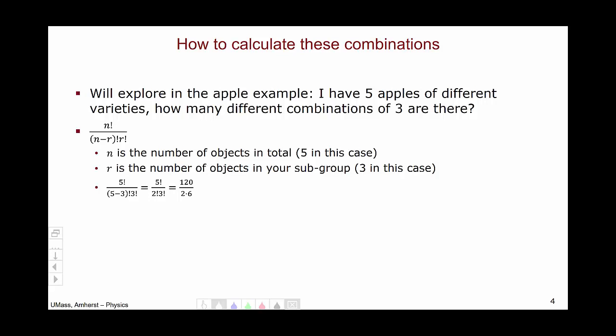Calculating out the factorials, we get 120 over two times six, which means that there are ten different combinations of three apples given the five that I have.